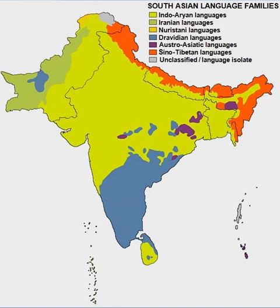The origins of the Dravidian languages, as well as their subsequent development and the period of their differentiation, are unclear, and the situation is not helped by the lack of comparative linguistic research. Inconclusive attempts have also been made to link the family with the Japonic languages and the extinct Elamite language by a Elamo-Dravidian hypothesis. Many linguists tend to favor the theory that speakers of Dravidian languages spread southwards and eastwards through the Indian subcontinent. Proto-Dravidian is thought to have differentiated into Proto-North Dravidian, Proto-Central Dravidian, and Proto-South Dravidian around 1500 BCE.